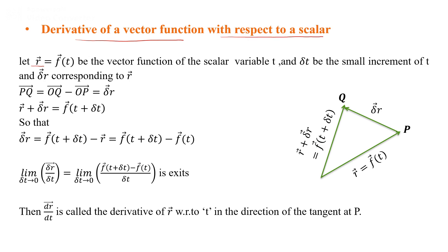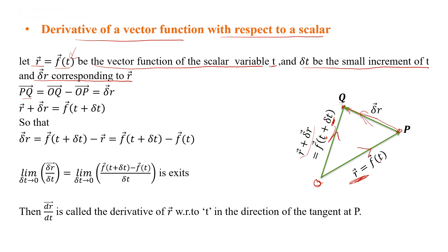The derivative of a vector function with respect to a scalar: suppose we have a vector r, or vector function f(t), of a scalar variable t. Let δt be a small increment in t and δr the corresponding change in r. If we have a point P moving to Q, then the vector PQ equals OQ minus OP, giving us the vector δr, where r + δr = f(t + δt).